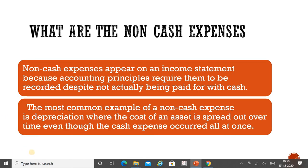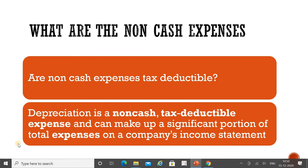Non-cash expenses appear on an income statement because accounting principles require them to be recorded despite not actually being paid for with cash. The most common example is depreciation, where the cost of an asset is spread out over time even though the cash expense occurred all at once.